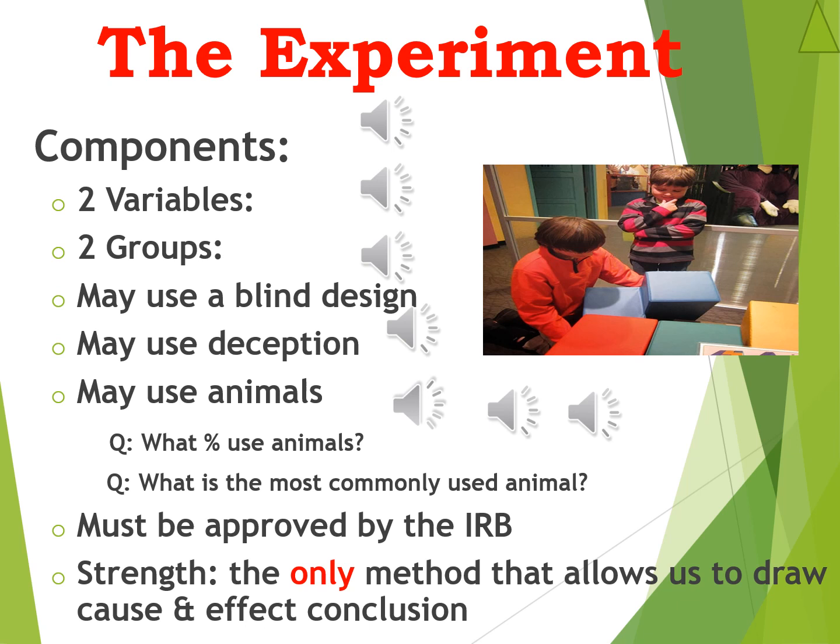Experiments may or may not use animals. A little less than 10% of psychology experiments use animals, and the most commonly used animal is rodents — almost all psychology experiments using animals use rodents. That means about 90% of experiments use people. In our particular course area of lifespan development, it's a much higher percentage using people — far less than the almost 10% across the general field.